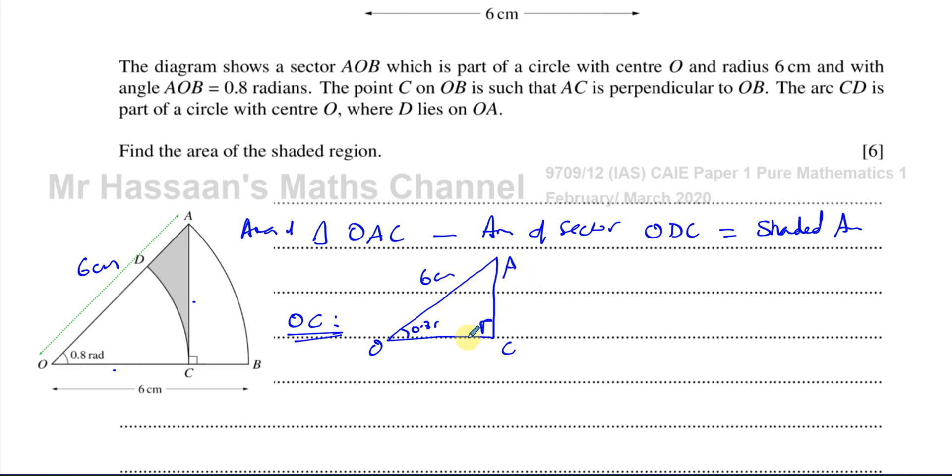It's a right-angled triangle. So we can say that if we're trying to find OC, we can call that X. This is adjacent. This is hypotenuse. So we can say cosine of the angle 0.8 is equal to adjacent over the hypotenuse. So X is equal to 6 times cosine of 0.8. I can leave it like that and use my calculator to get me an exact answer in the end and then round it right at the end.